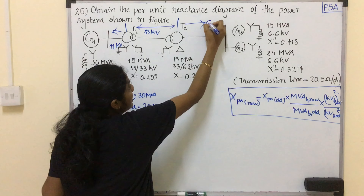For G3: MVA base new is 30 and MVA base old is 25. KV base old is 6.6 kV and KV base new is 6.2 kV. X per unit old is equal to 0.3214. So substituting: 0.3214 multiplied by 30 divided by 25 multiplied by 6.6 divided by 6.2 squared — the value will be 0.437 per unit. Now G1, T1, T2, G2, G3 — all values have been calculated.